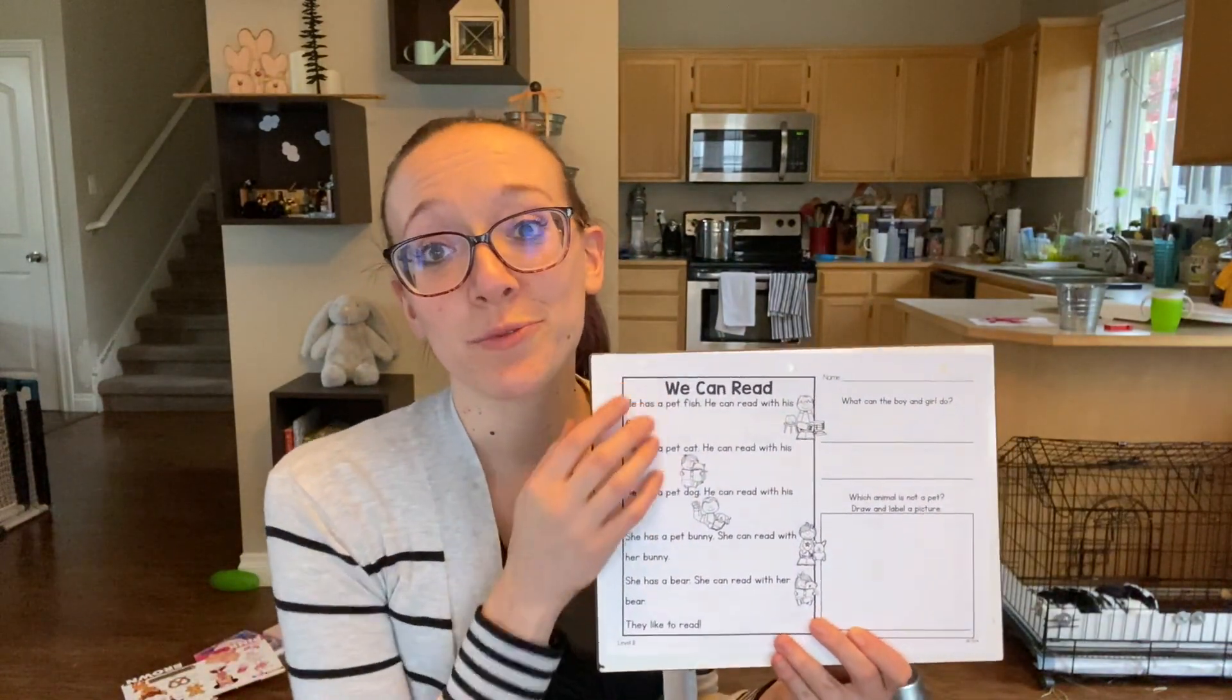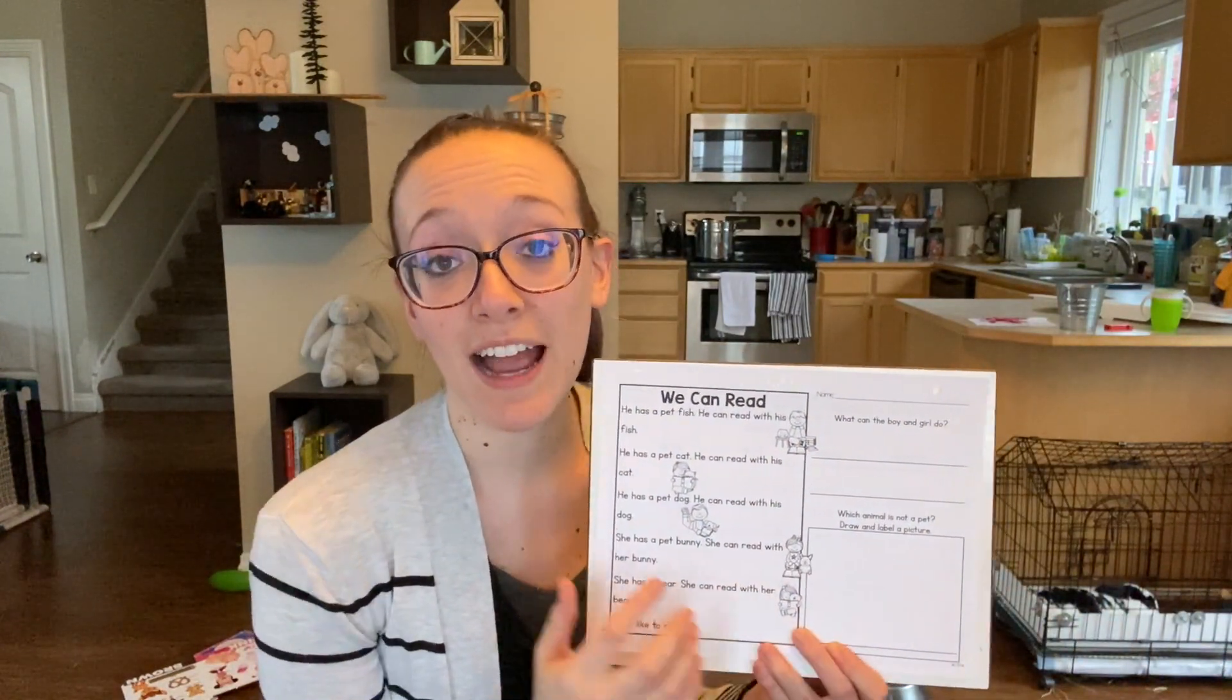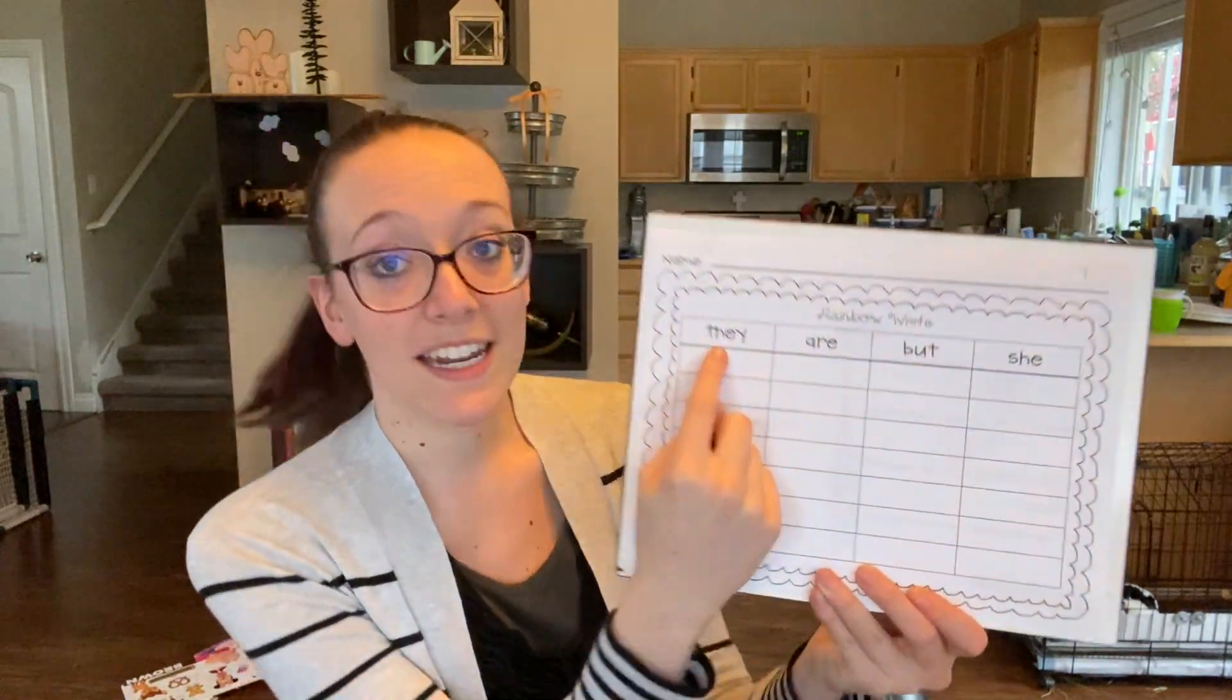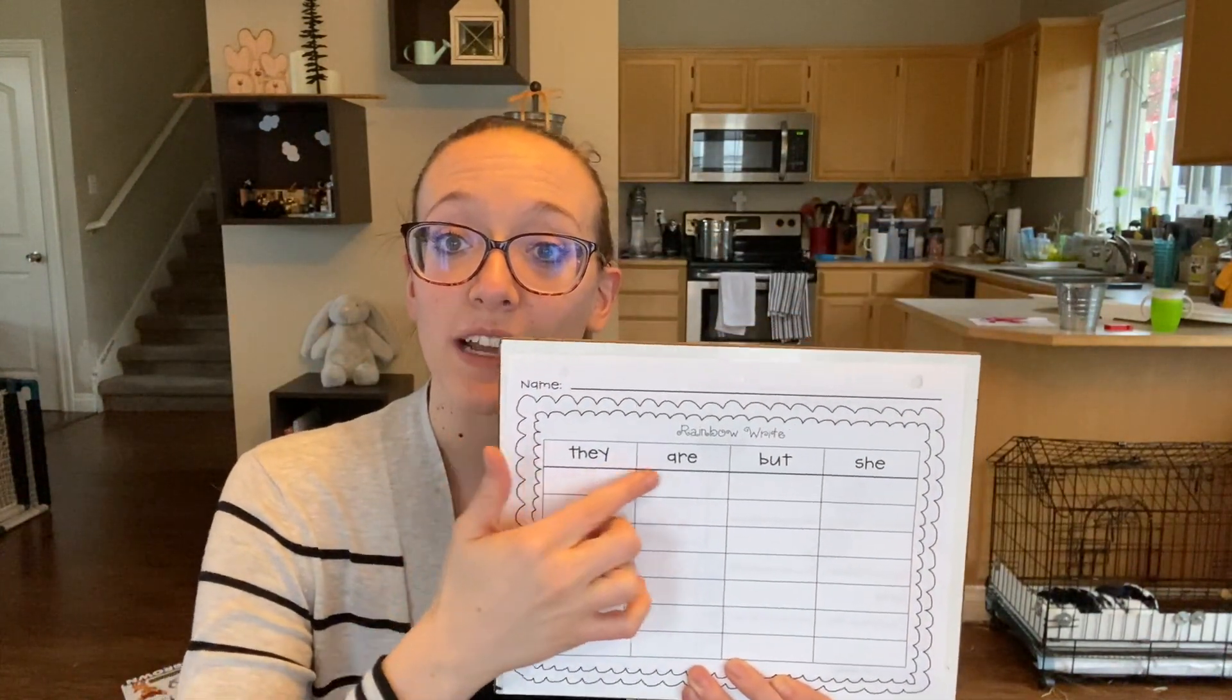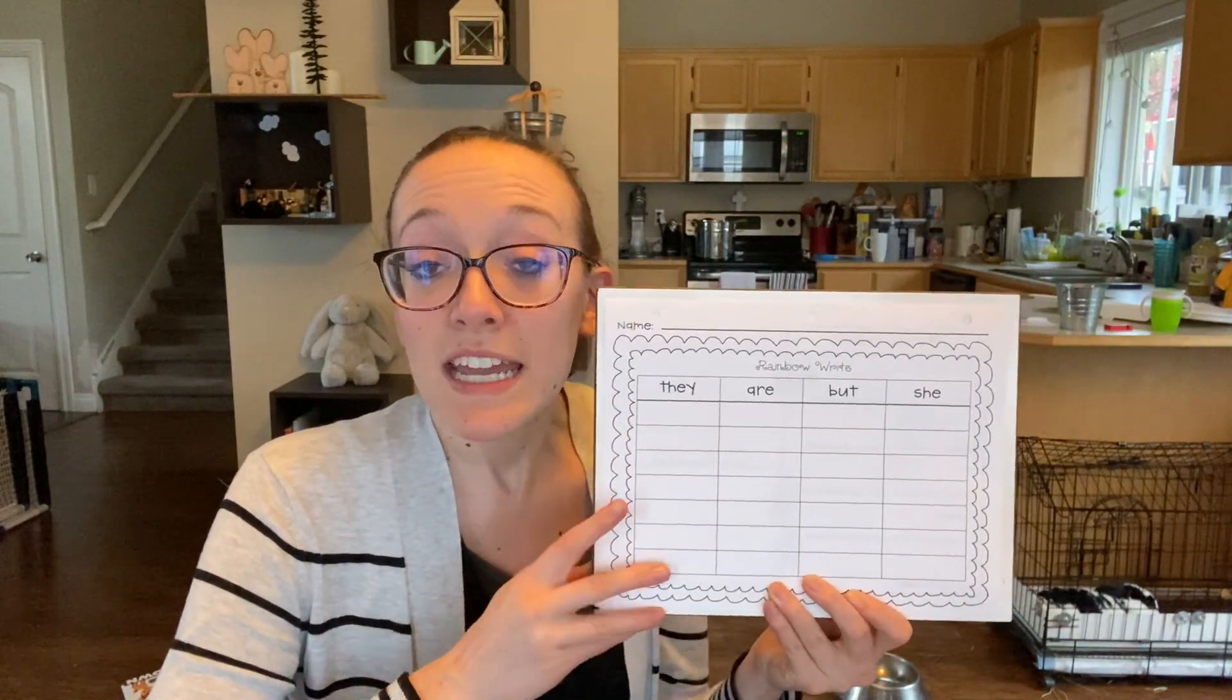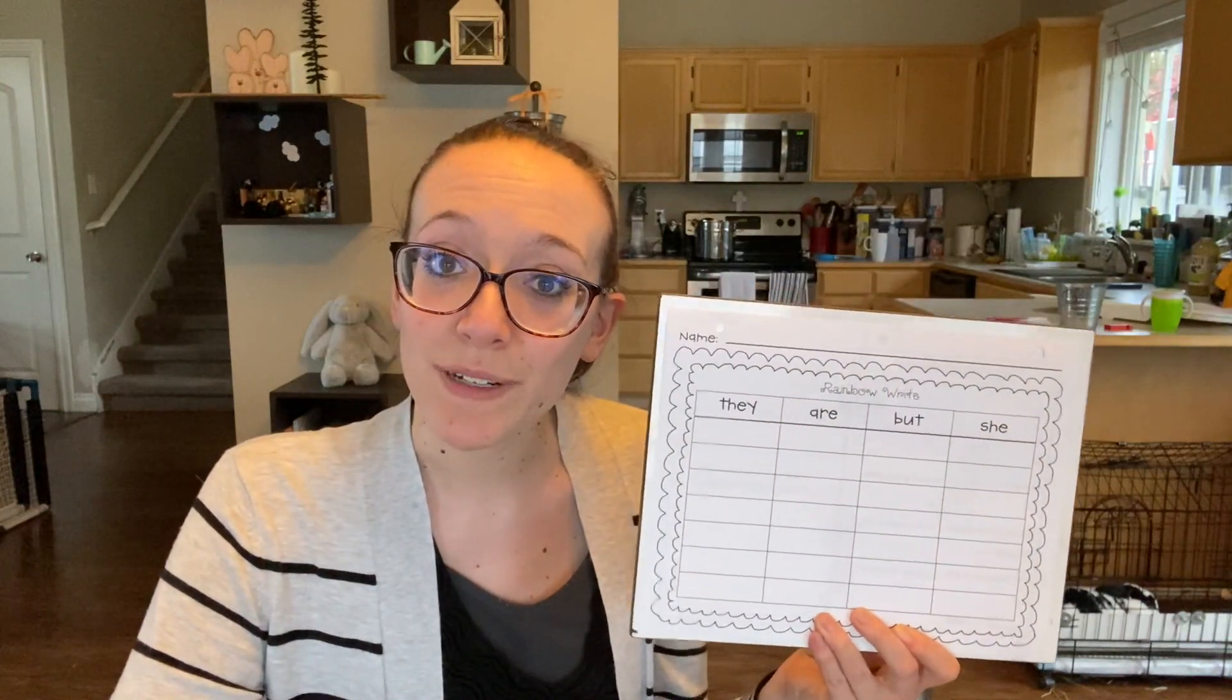For reading today, make sure you read your passage three times to get that extra practice with reading and then answer your questions that are asked about the passage that you just read. And then on the back, you're going to be doing a rainbow write. Our words today are the words 'they', 'are', 'but', and 'she'. So you're going to be using your colors red, orange, yellow, green, blue, purple, and pink to do a rainbow write. If you don't have those crayons, choose any colors you can find. The more you practice writing them, the better you will be at reading them.